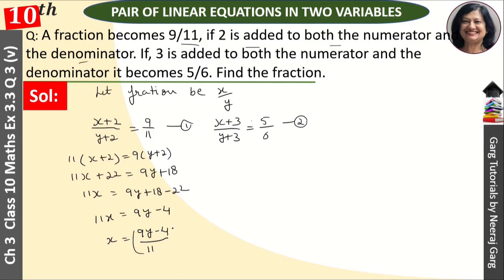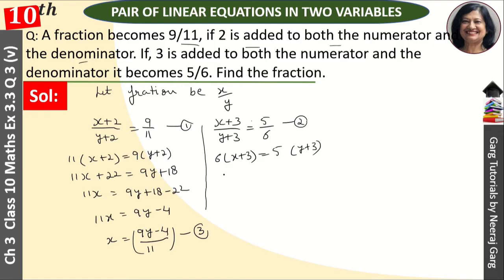यह हमारी x की value आई, इसको हम third equation ले लेते हैं. अब second equation को थोड़ा solve कर लेते हैं. Cross multiply करते हैं: 6(x + 3) = 5(y + 3). अब हम x की जगह इस value को put कर देंगे: 6 × (9y − 4) upon 11 + 3 = 5y + 15.